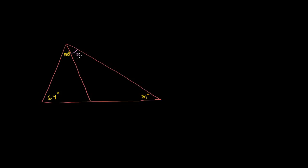You might want to give a go at it, just knowing what you know about the sums of the measures of the angles inside of a triangle, and maybe a little bit of what you know about supplementary angles. The general way to think about a lot of these problems, where they give you some angles and you have to figure out some other angles based on sum of angles in a triangle equaling 180, is to just fill in everything that you can figure out. One way or another, you'll probably be able to figure out what this question mark is.